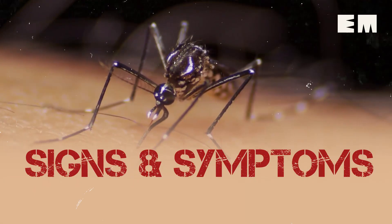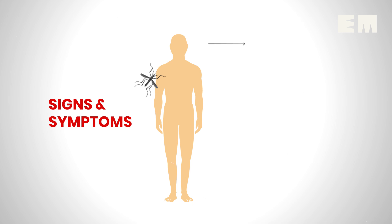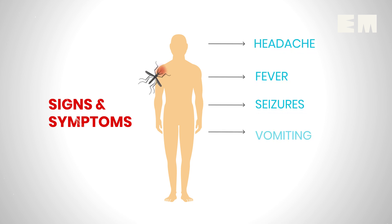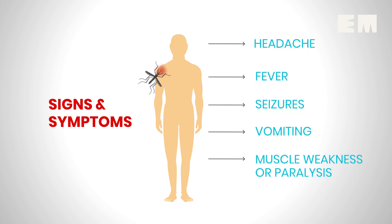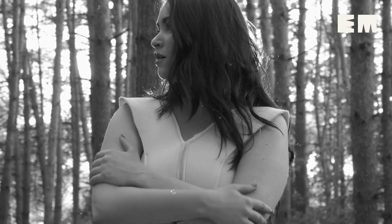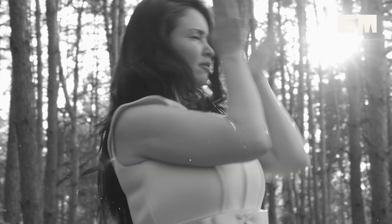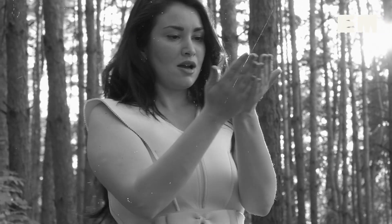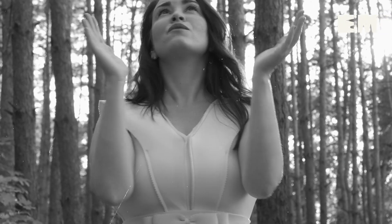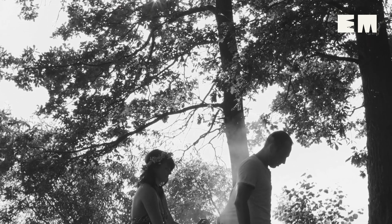Signs and Symptoms. Symptoms include headache, fever, seizures, vomiting, and muscle weakness or paralysis. It may show low symptoms in some people. However, the disease can be serious, causing infection or inflammation of the brain, permanent damage to the nervous system, or death.